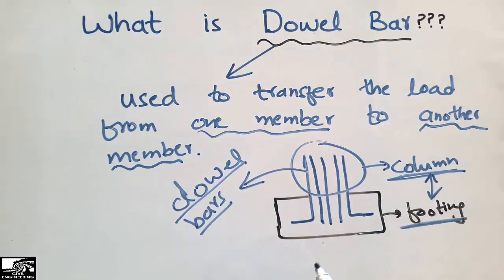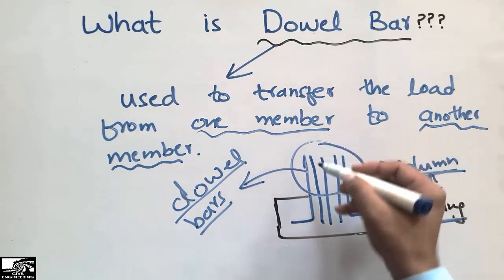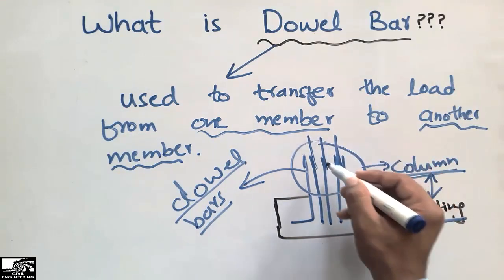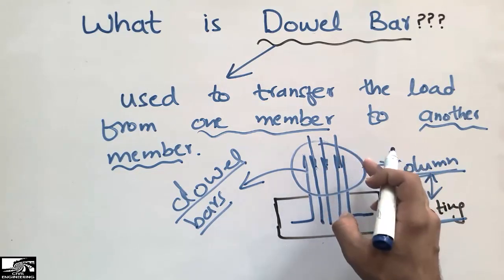The straight bars are another type of reinforcement. They are used to transfer the load in the same member. For example, the column is overlapped with another column reinforcement, so we don't call this type of reinforcement the dowel bar.